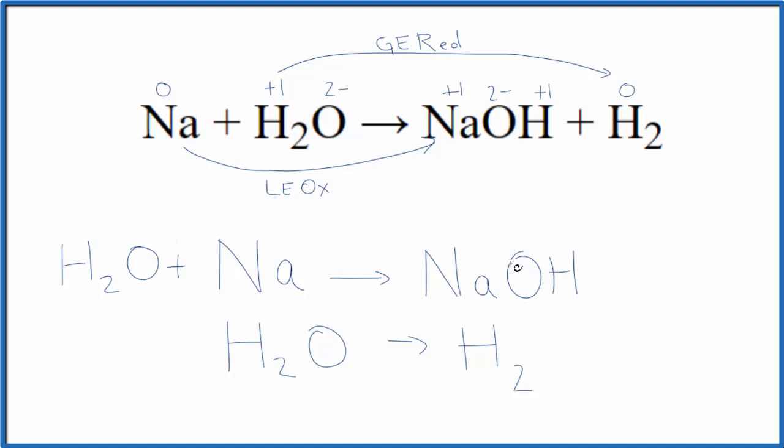Now we have an oxygen and an oxygen, sodium and sodium. We have two hydrogens here and one here. We can also add H plus, this hydrogen ion here. Those are the two things we can add: H plus and H2O. Now all of the atoms are balanced.